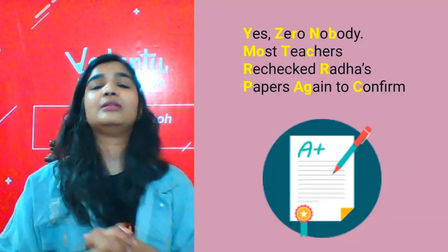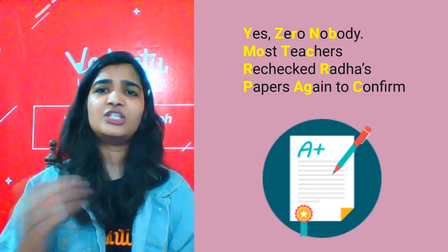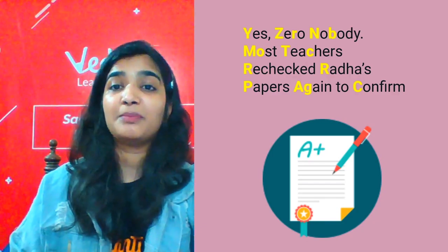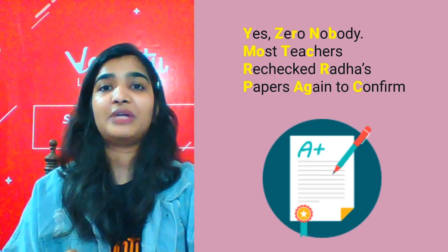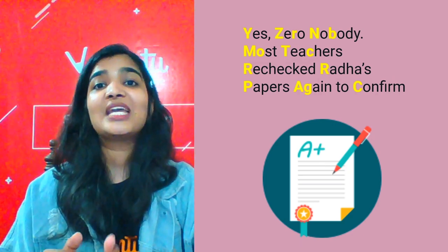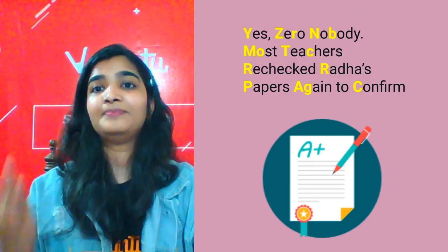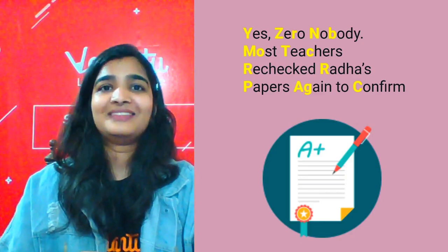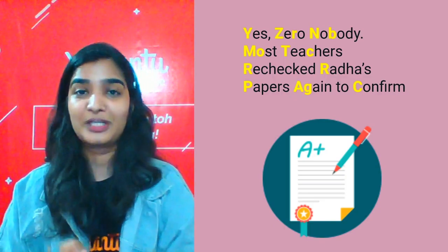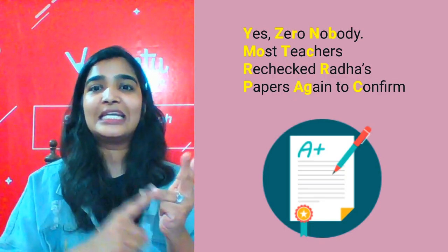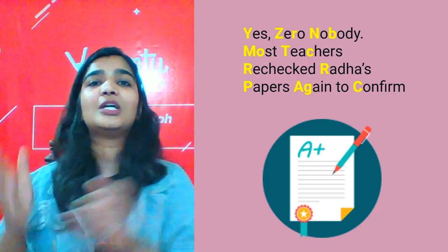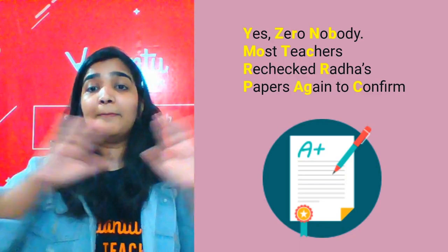This is period 5. The mnemonic is: 'Nobody. Most teachers reject Radha's paper again to confirm.' The period 5 D-block elements are: yttrium (Y), zirconium (Zr), niobium (Nb), molybdenum (Mo), technetium (Tc), ruthenium (Ru), rhodium (Rh), palladium (Pd), silver (Ag), cadmium (Cd). 'Nobody — most teachers reject Radha's paper again to confirm' — yttrium, zirconium, niobium, molybdenum, technetium, ruthenium, rhodium, palladium, silver, cadmium. These are the elements in period 5.